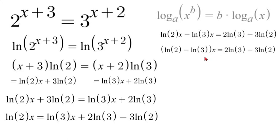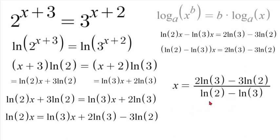So now that our x value is on the outside we can divide by (natural log of 2 minus natural log of 3) so that x will be left by itself. So we have x is equal to (2 natural log of 3 minus 3 natural log of 2) over (natural log of 2 minus natural log of 3).